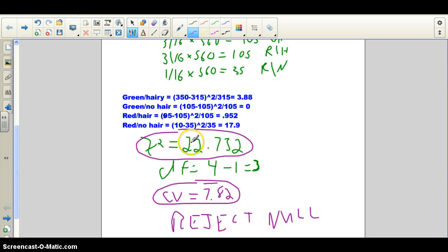And then your last step is to compare the chi-square value to the critical value. If your chi-square value is larger than the critical value, you reject your null hypothesis. If your chi-square value is smaller than the critical value, you fail to reject your null hypothesis, which basically means you're accepting it, but you never say that.